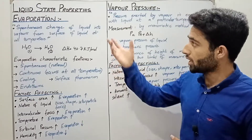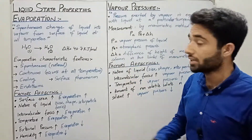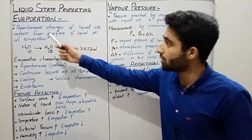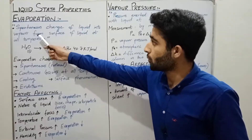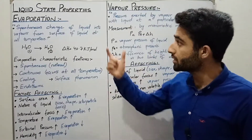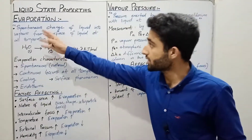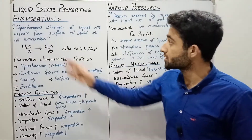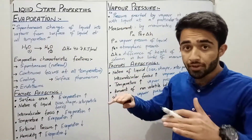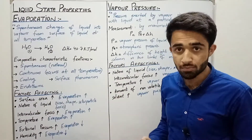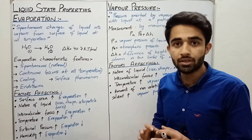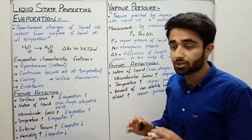Let's start with evaporation. Evaporation is the spontaneous change of liquid into vapors from the surface of a liquid at all temperatures. It is a natural or unforced change. For example, the enthalpy change of water evaporation is 40.7 kilojoules per mole.